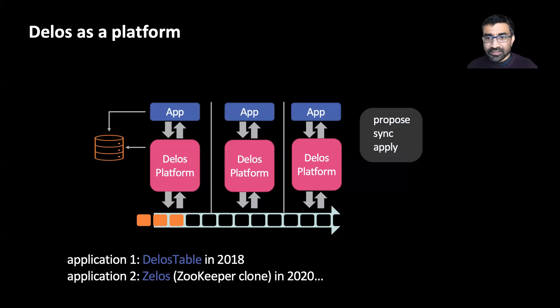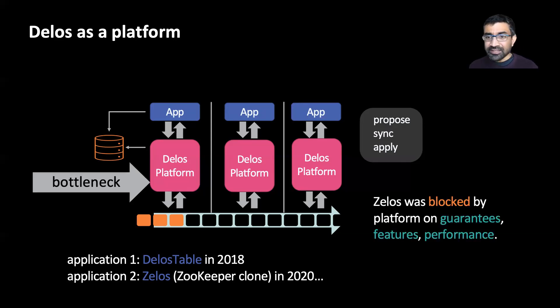We used this architecture to build our first database Delos table in 2018. In 2020, a second team started building Zelos, a Zookeeper clone, as an application on the same platform. But we immediately ran into trouble. In practice, Zelos needed multiple changes to the platform code to obtain stronger ordering guarantees, additional features, as well as performance parity with Zookeeper. In effect, the platform became a bottleneck, not in terms of scaling or throughput, but in terms of developer productivity.